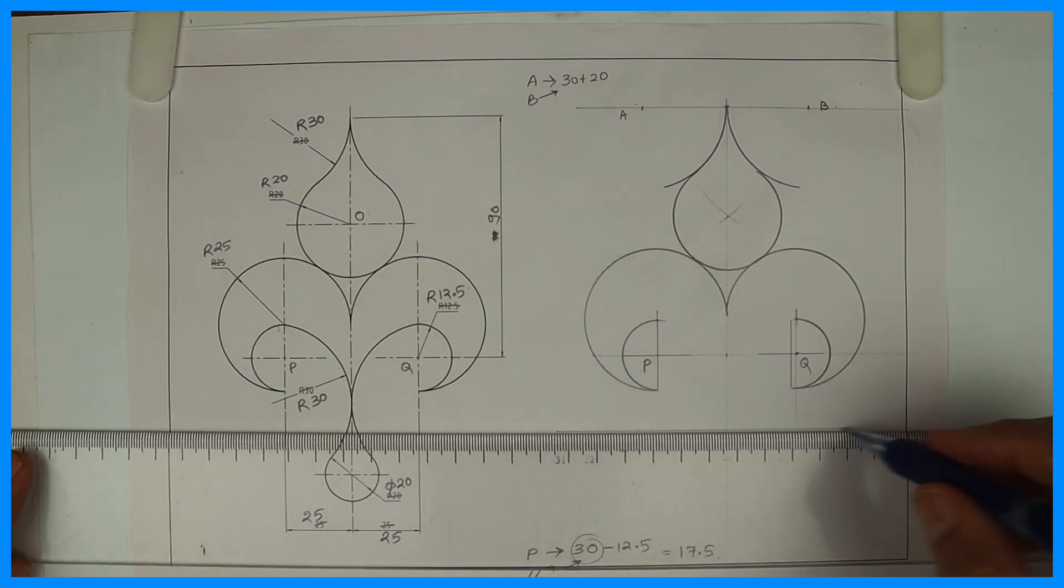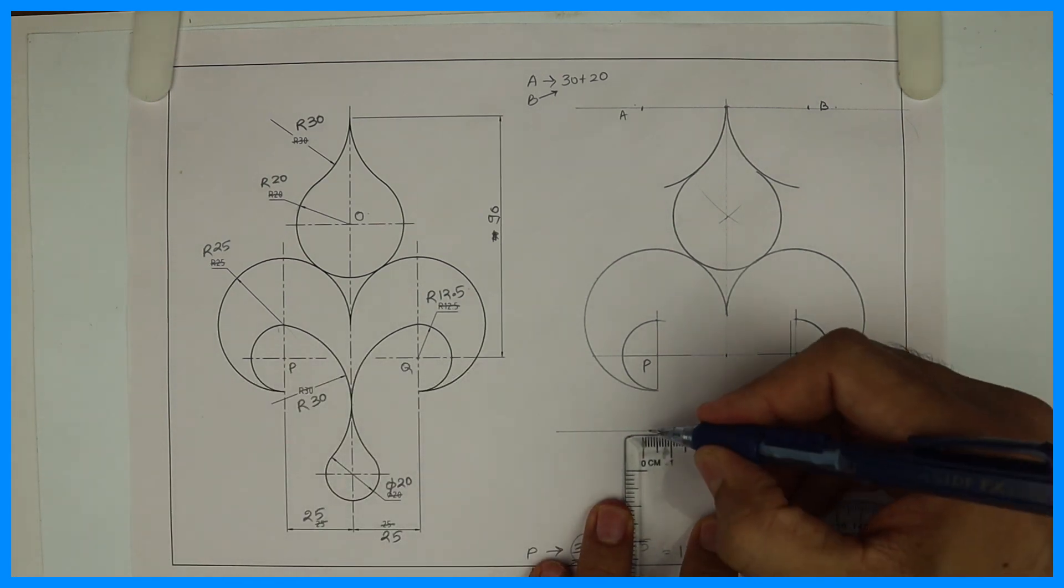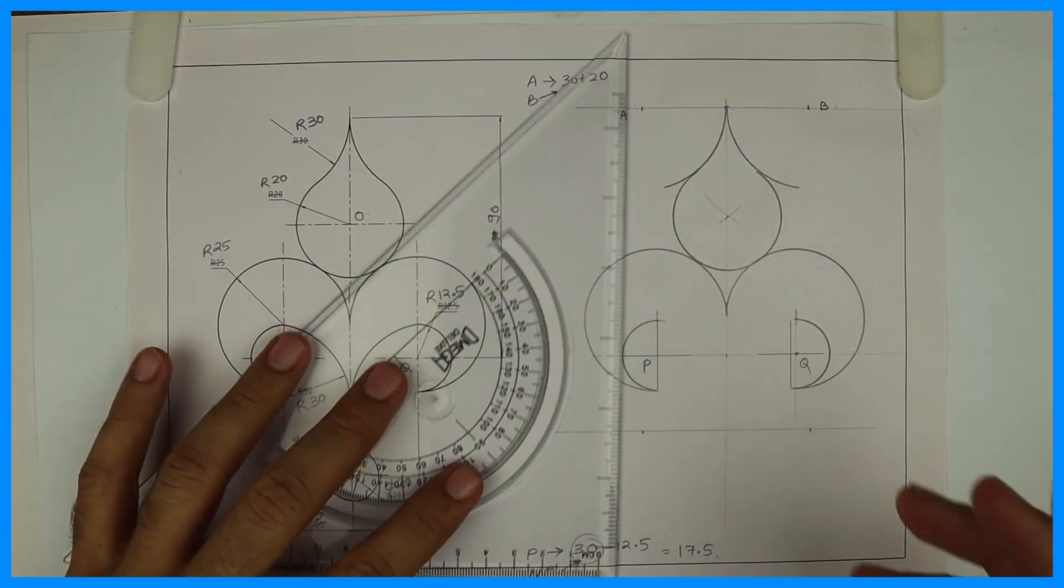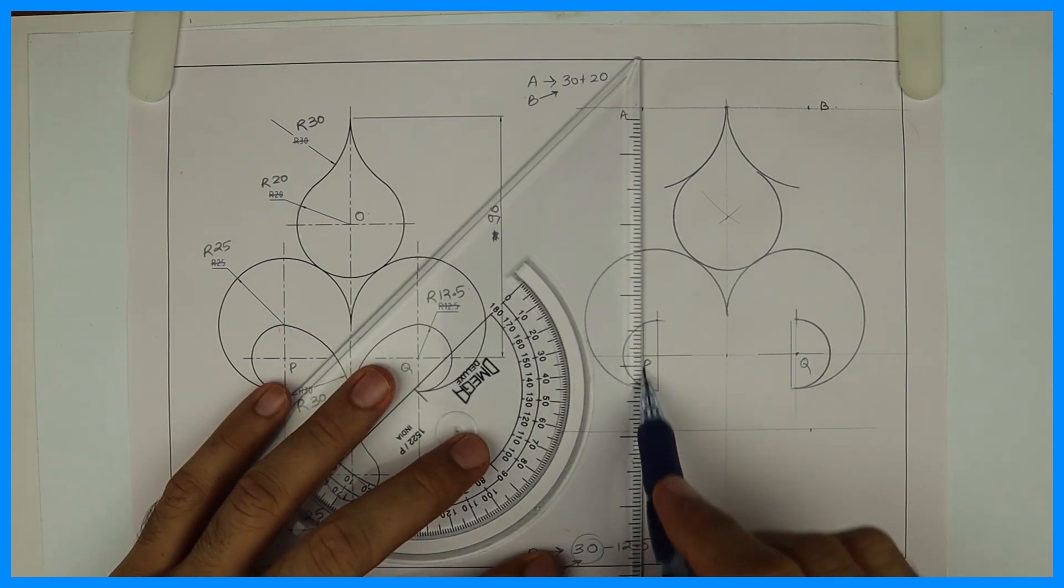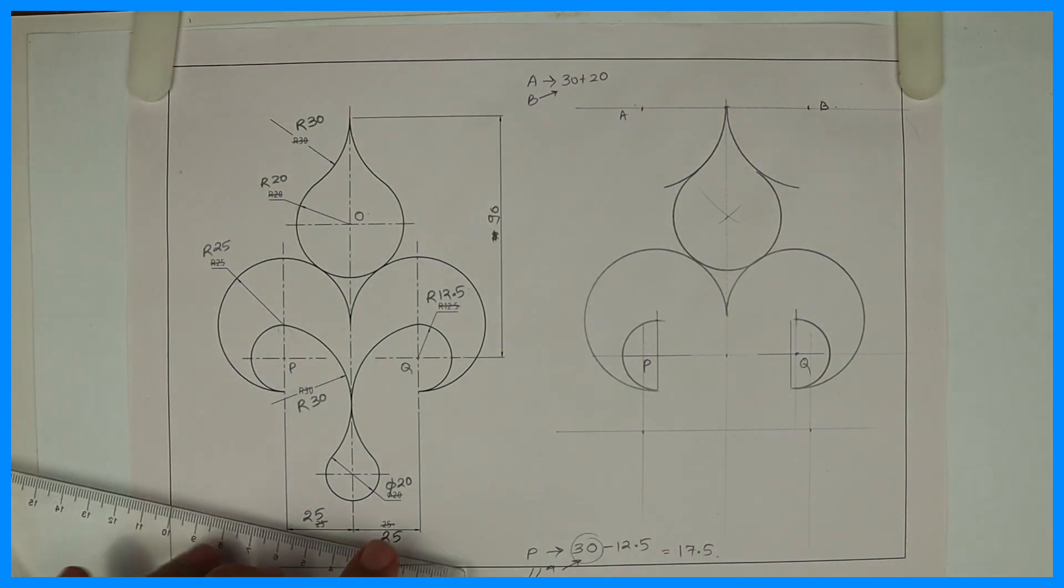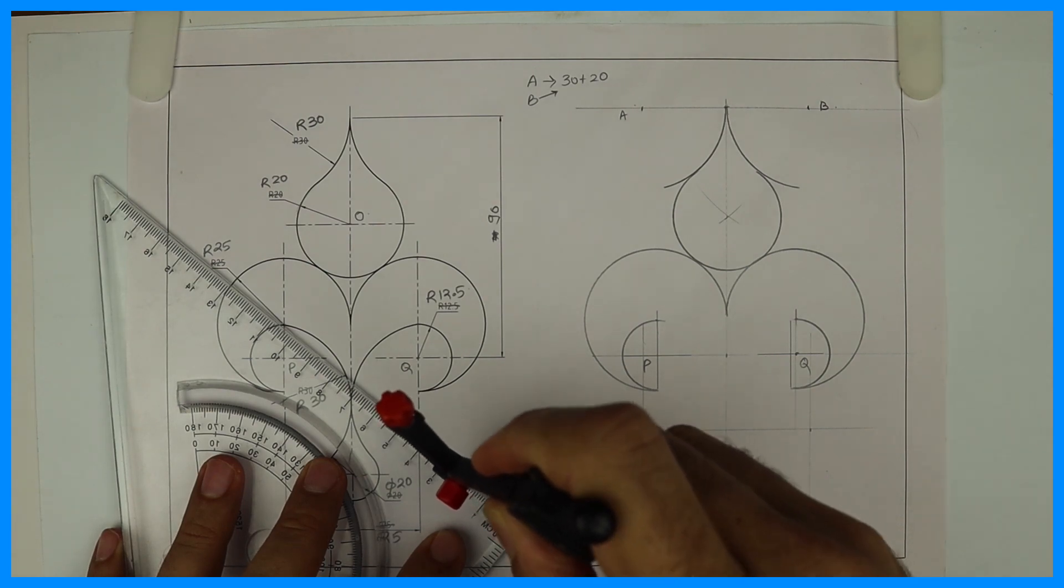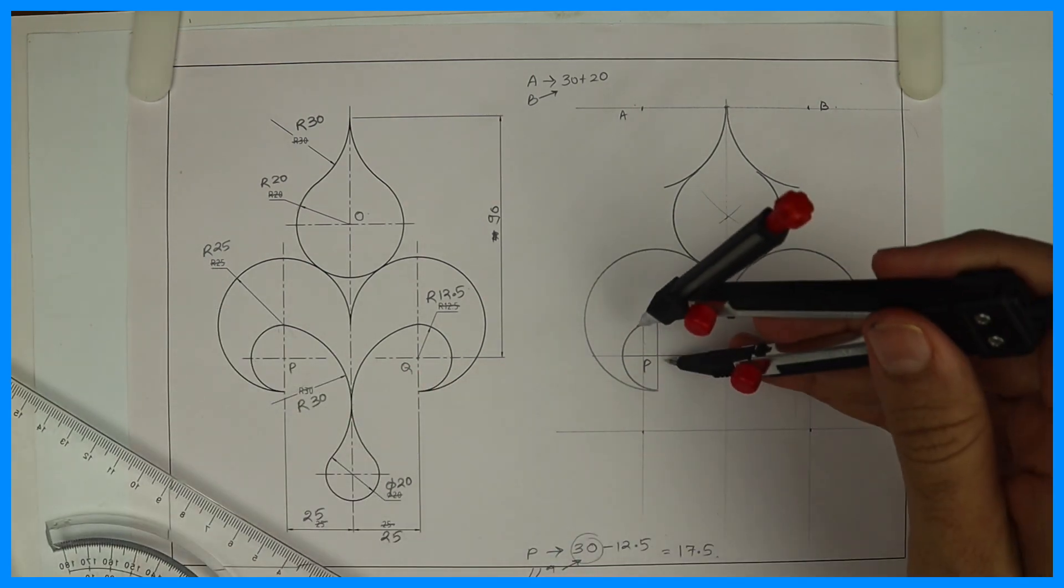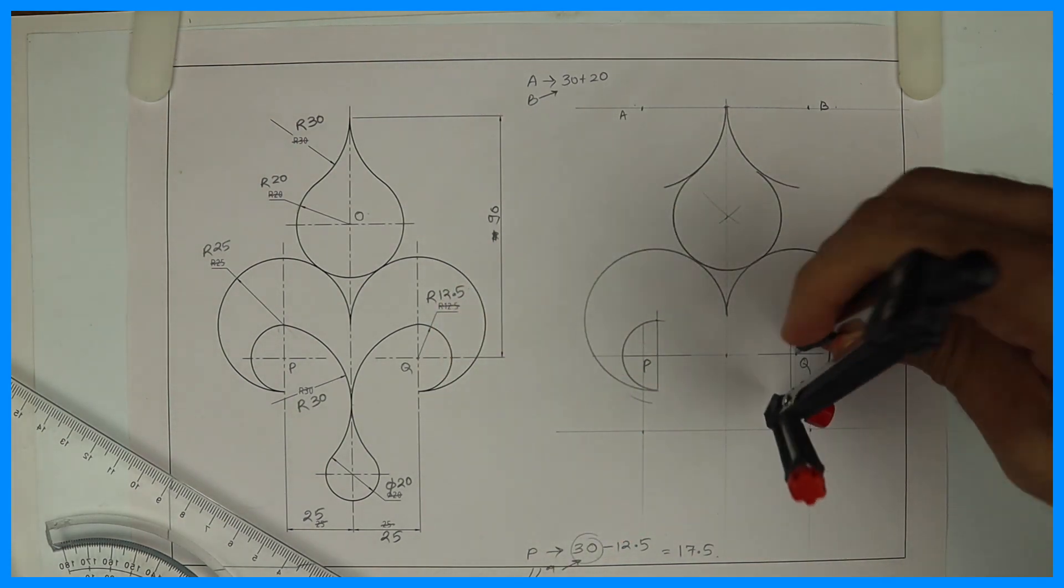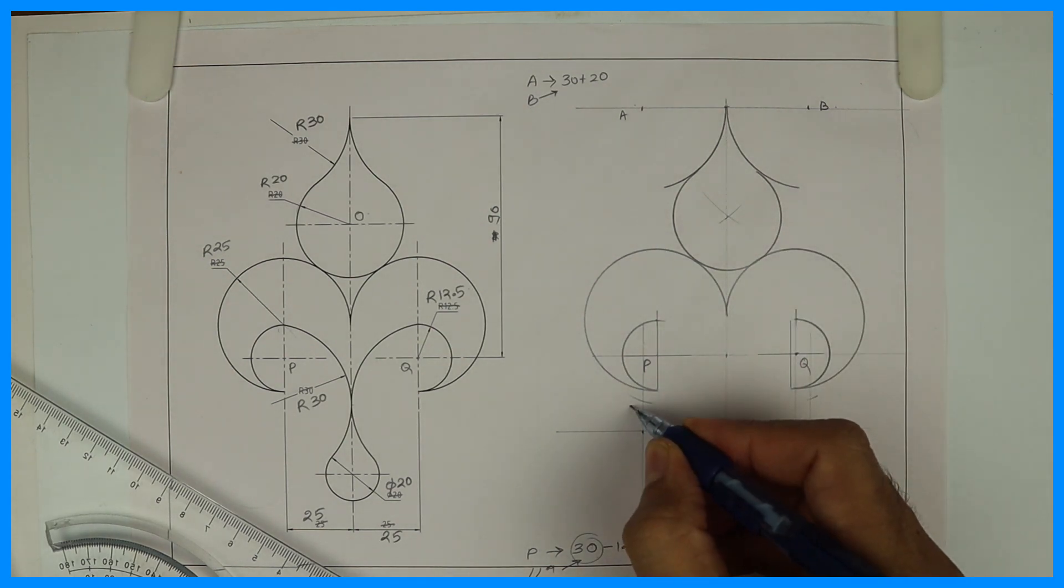So what I'll do is draw one horizontal line anywhere and take 30 on both sides because we need to draw a parallel line. After that, from P cut 17.5 because the radius 30 is internal to 12.5, so 30 minus 12.5 would be 17.5. From P cut 17.5 and from Q cut 17.5. Wherever they intersect with that 30mm parallel line, that would be point C and D.